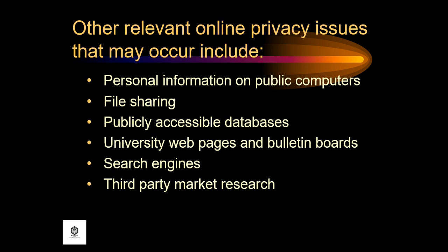Next is publicly accessible databases. Many universities have databases with public access — for example, databases that contain directories for students and staff. These databases may contain privacy-sensitive information for which students and staff have given no permission.